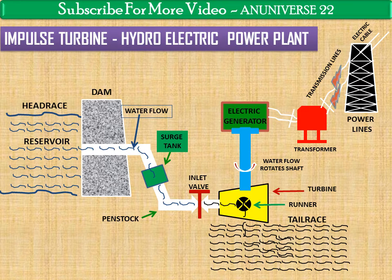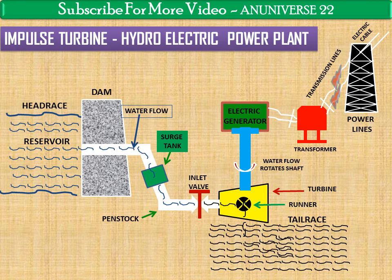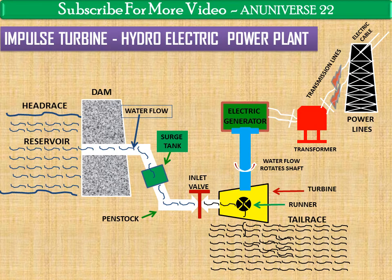That is the working of the impulse turbine used in a hydroelectric power plant. One point to be noted: the draft tube is not used here. The draft tube is used in a reaction turbine. Here, the pressure remains constant at atmospheric pressure throughout the process, which is why the draft tube is not used.